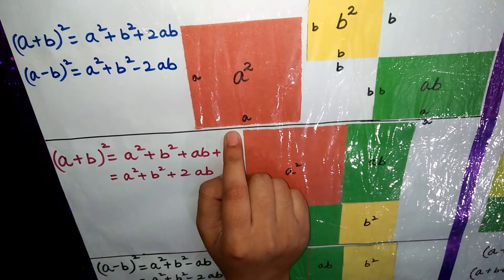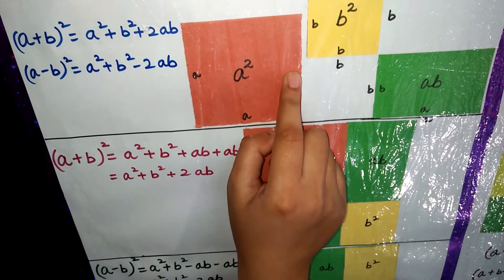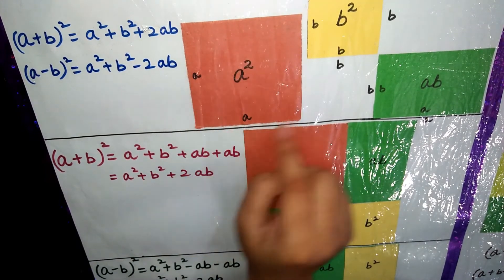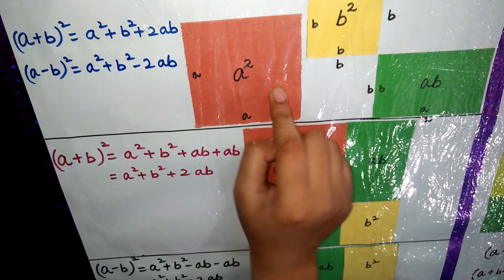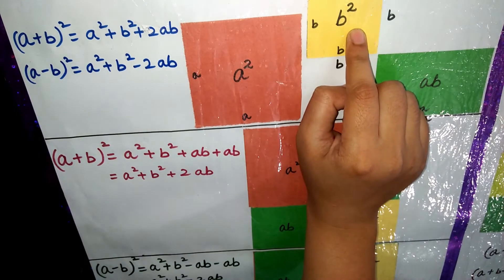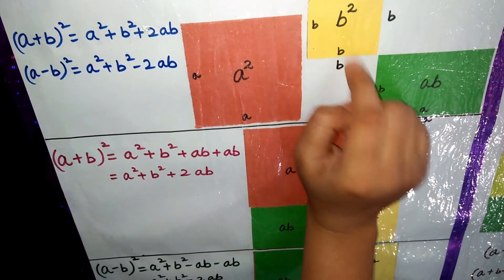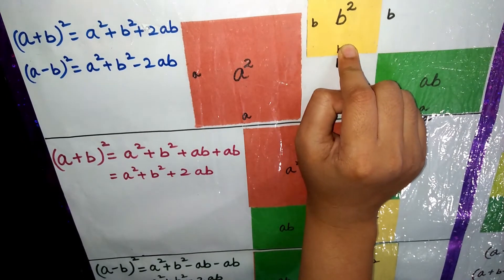So take a square. As you all know that square has all equal sides. So this is a, a, a and a. So this area is a square. Now take a square of all equal sides, this is b, b, b and b. So area is b square.